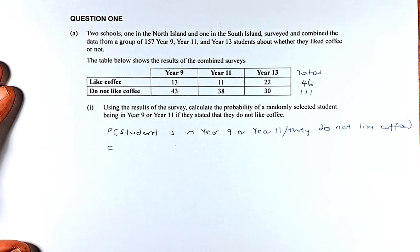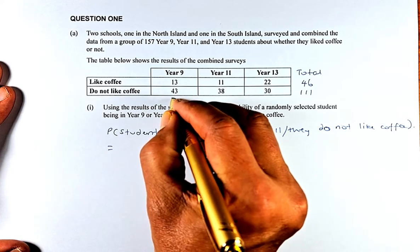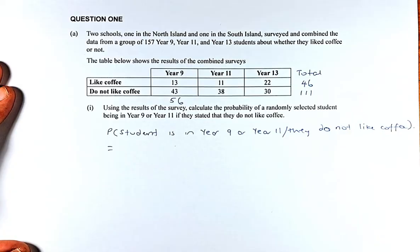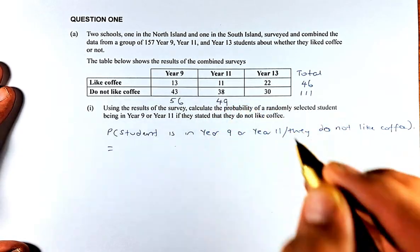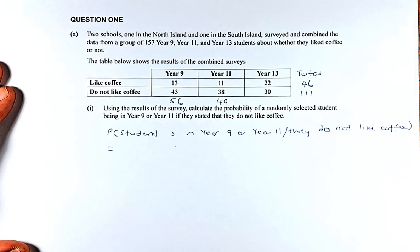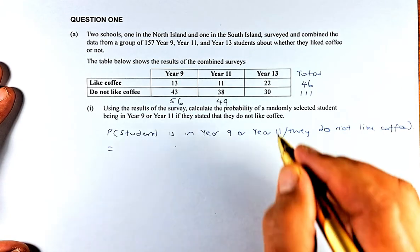Now we're going to calculate the column totals for Year 9, Year 11, and Year 13. For Year 9, 13 plus 43 equals 56. Year 11, 11 plus 38 equals 49. And for Year 13, 22 plus 30 equals 52.